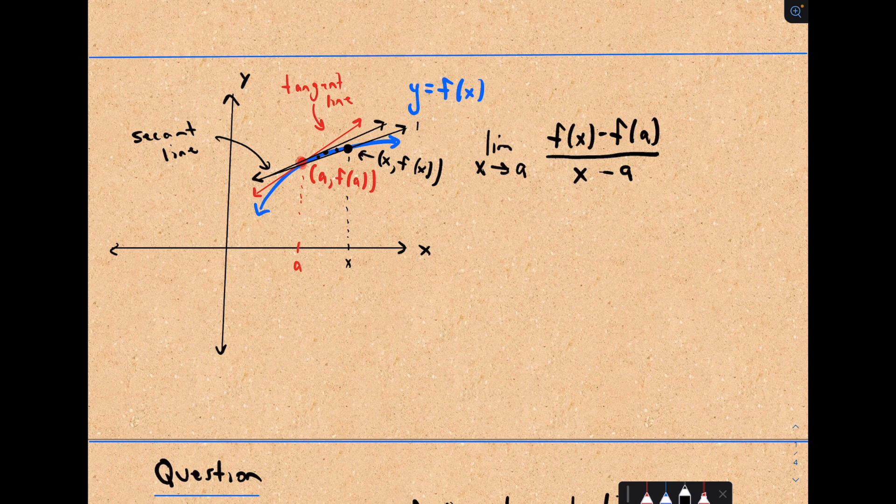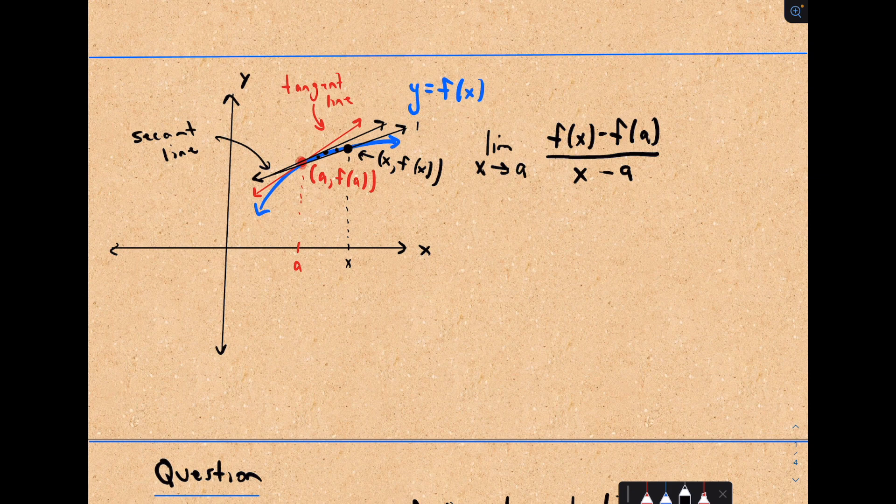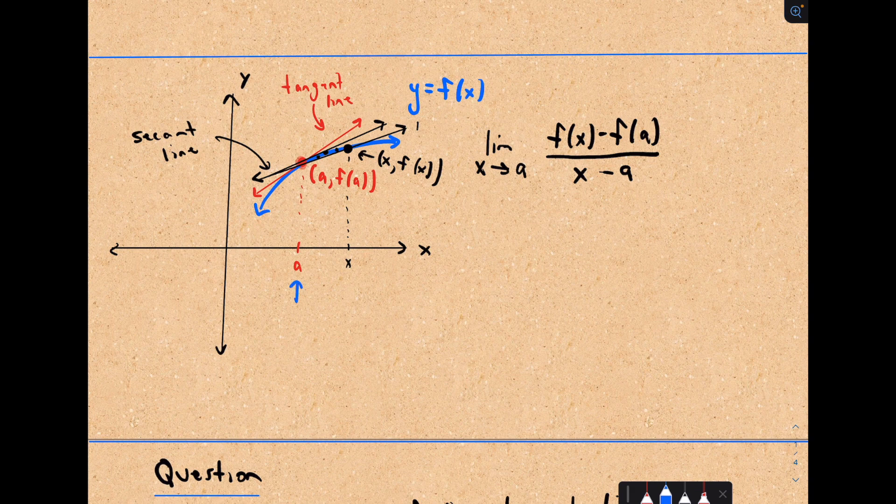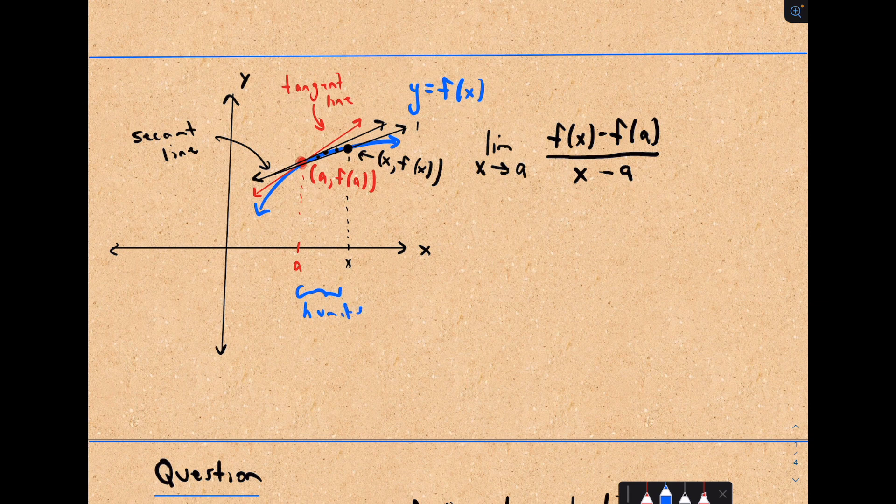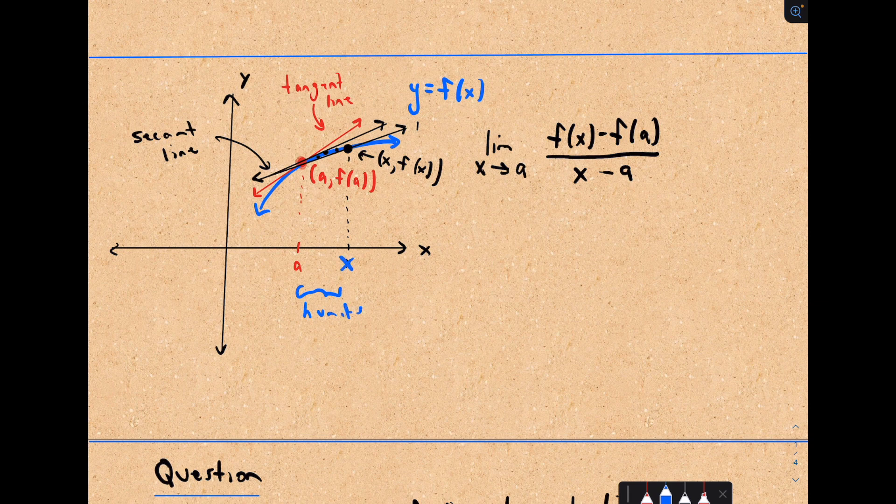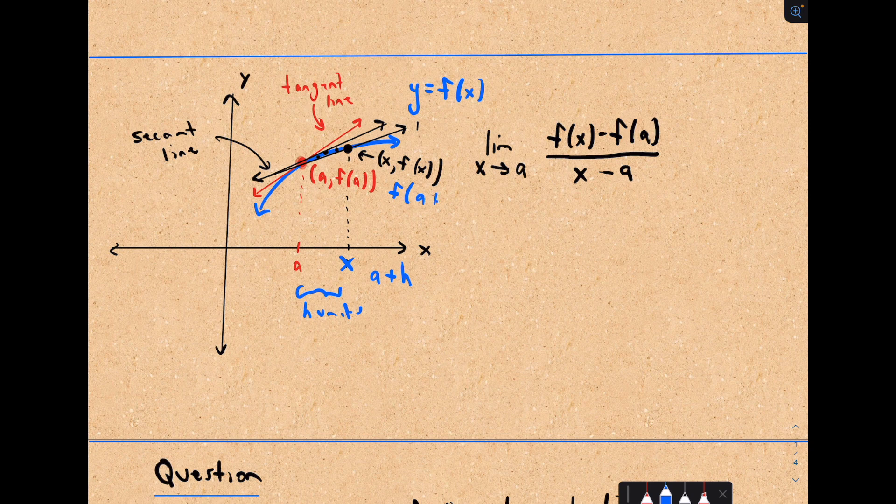Another way that we can do this is an alternate definition that you'll often also see. We were at this point a, let's suppose we just move over h units. If I move over h units, instead of calling this x, I could call it a plus h. And instead of having f of x, I would have f of a plus h.